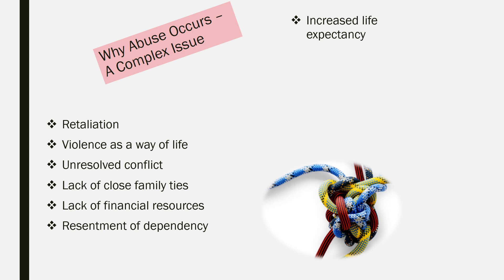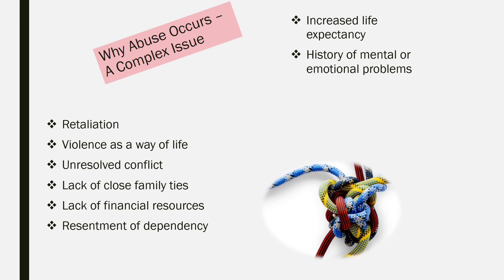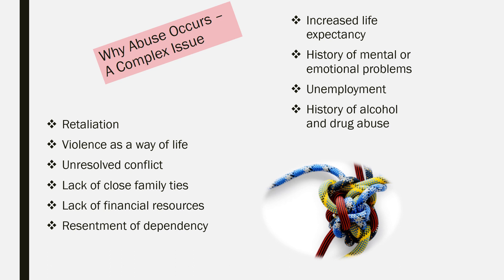Resentment of dependency — in particular, there will be fewer adult children to care for their elderly parents and grandparents in the future. History of mental or emotional problems — the caretaker may not be able to cope properly with the demands of caregiving, and a person who is mentally or emotionally unstable may be inappropriate as a caregiver. Unemployment — financial and emotional stress raises the level of frustration and weakens self-control, leading to abuse. History of alcohol and drug abuse — substance abuse is frequently a factor in family violence, as alcohol suppresses inhibitions, making aggressive behavior much more likely.